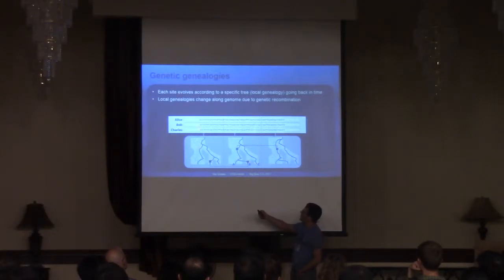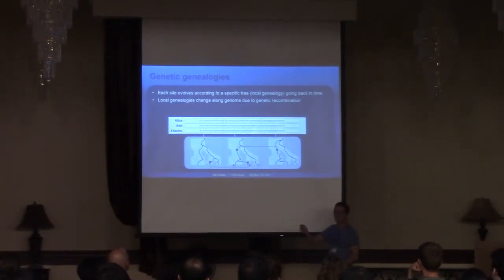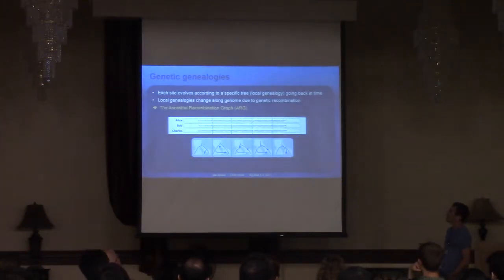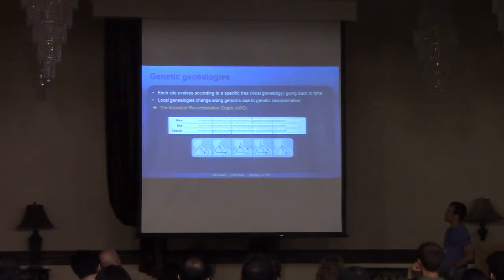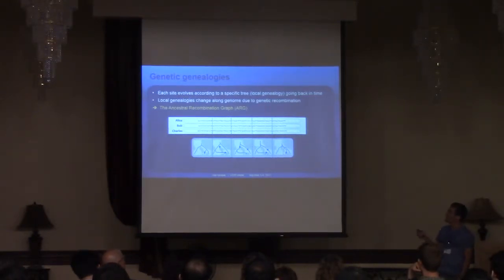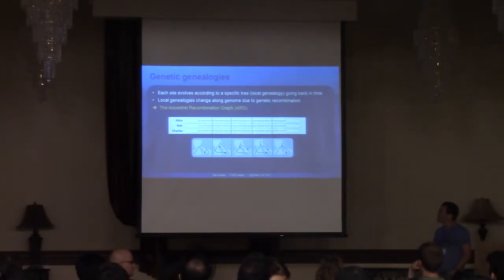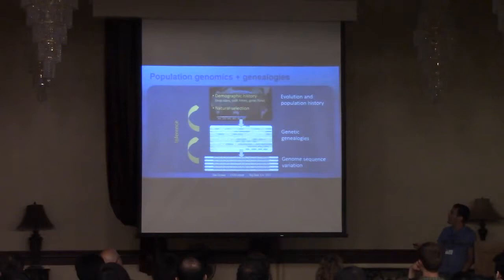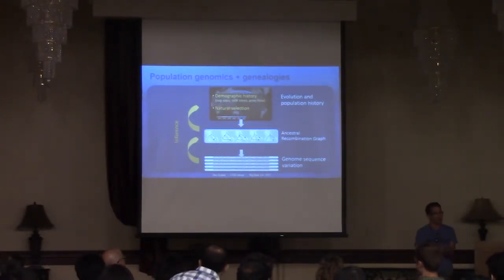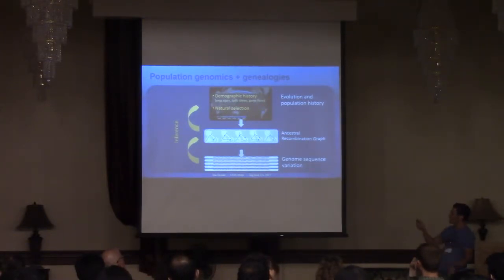The idea is to use this variation to learn something about population history. This big structure that conveys all of this information — the local genealogies and how they change — is called the ancestral recombination graph, or ARG. You're going to see different talks mentioning this concept during CGSI. When I'm doing this type of inference and thinking about the genetic genealogy in the middle, it's actually this ARG — I try to think about what features of the ARG I can extract in order to learn something about population history.